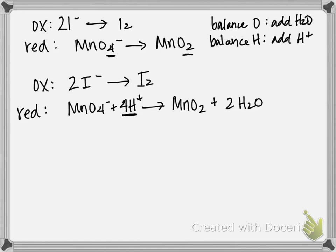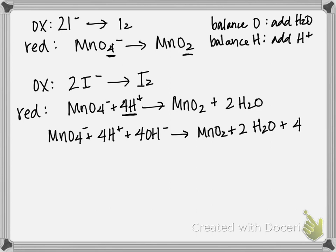So my new half reaction is going to become MnO4 minus plus 4 H+ plus 4 OH minus gives you MnO2 plus 2 H2O plus 4 OH minus. Because whatever we do to the reactant side, we have to do to the product side. Now we're not quite done with this. Once we add the OH minus, this H+ and this OH minus, those are going to combine.